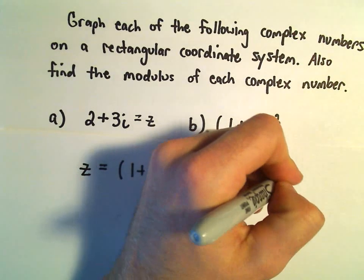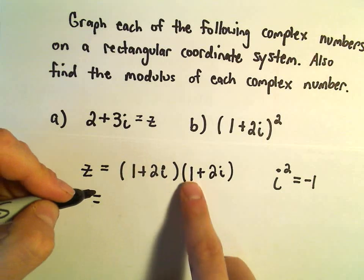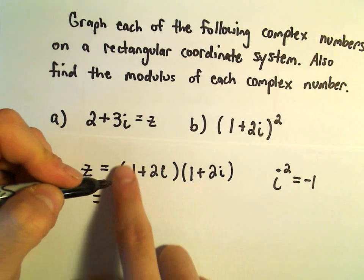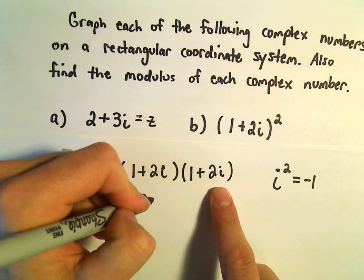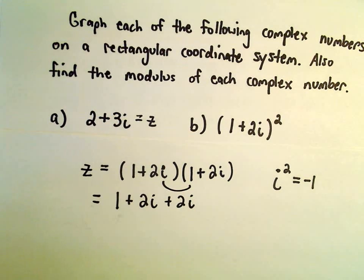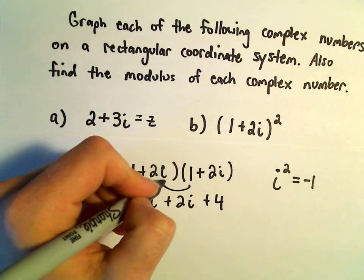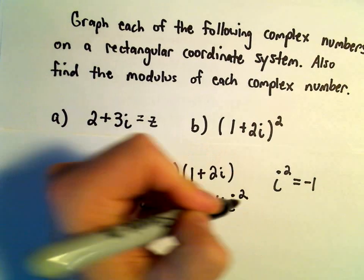Recall for complex numbers that i squared equals negative 1. But I'm just going to distribute. We'll get 1 times 1 which is 1, 1 plus 2i which will be 2i, 2i times 1 which is 2i, 2 times 2 which is 4, and i times i which is i squared.